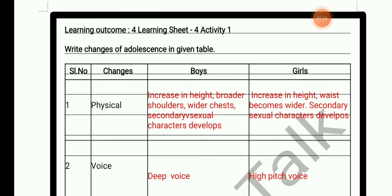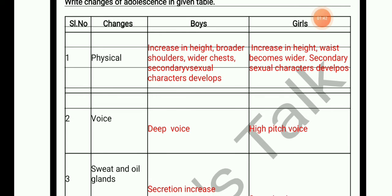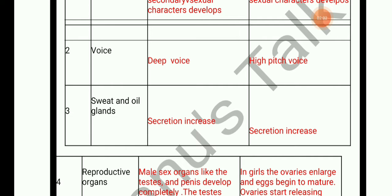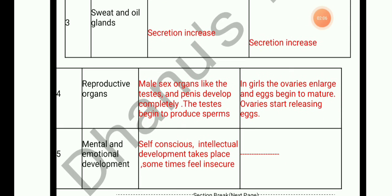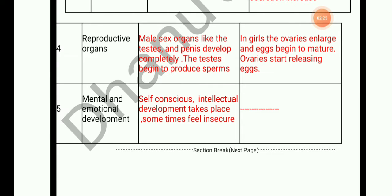Learning outcome 4, Learning sheet 4, Activity 1: physical changes in adolescence. In boys: increase in height, broader shoulders, wider chest, secondary sexual characters develop. In girls: increase in height, waist becomes wider, secondary sexual characters develop. Voice: deep in boys, high pitch in girls. Sweat and oil gland secretion increases in both. Reproductive organs develop fully. Mental and emotional development occurs in both; intellectual development takes place, and sometimes they feel insecure.